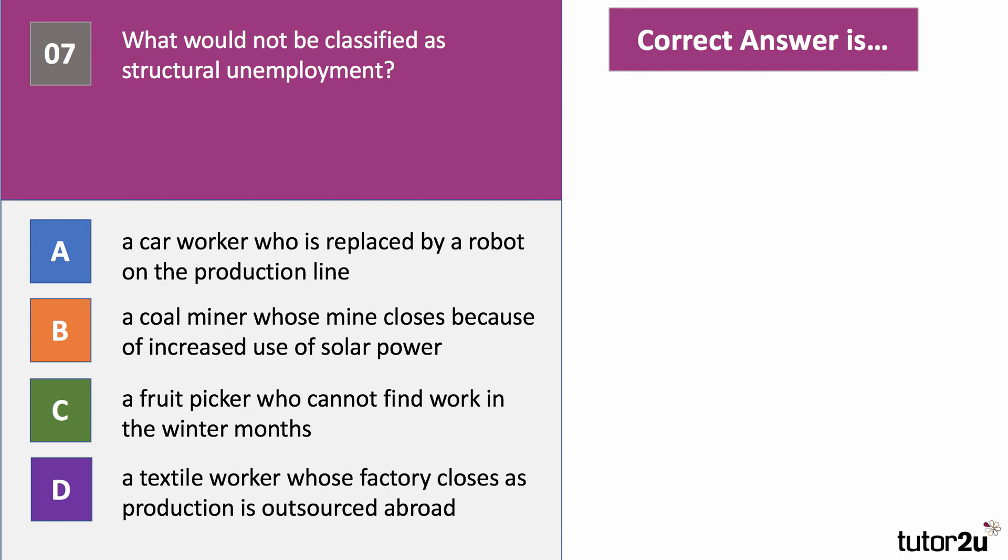Question seven: what would not be classified as structural unemployment? Have a go. The answer is C — seasonal unemployment. All the other options are potentially causes of structural unemployment.